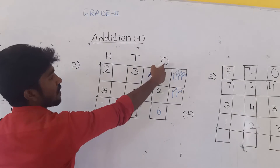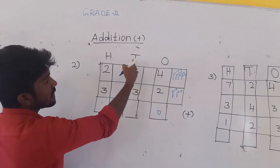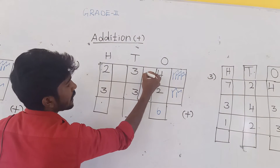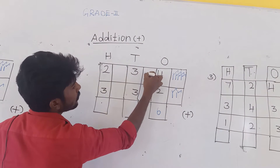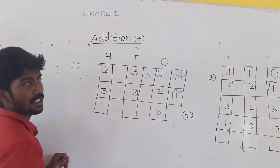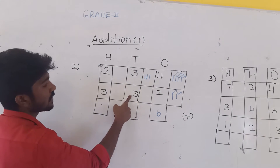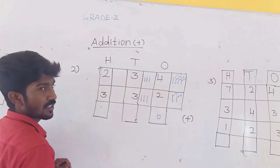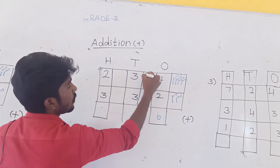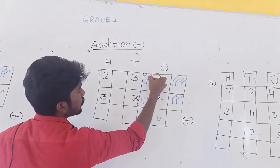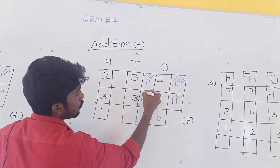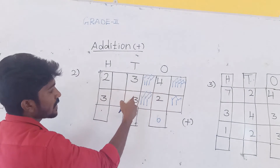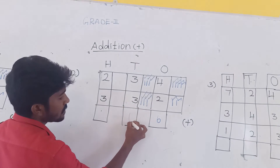1s value finished. Next, 10s value. First number is 3, so draw 3 lines. Next value is also 3, so draw 3 lines. Add these lines: 1, 2, 3, 4, 5, 6. So 3 plus 3 is equal to 6.